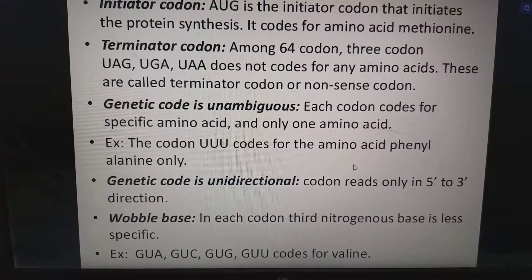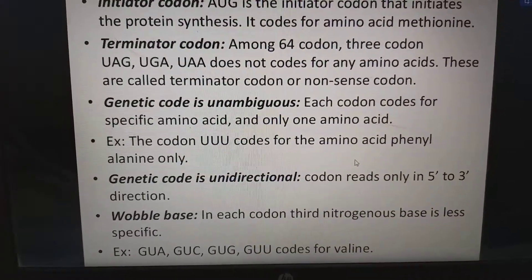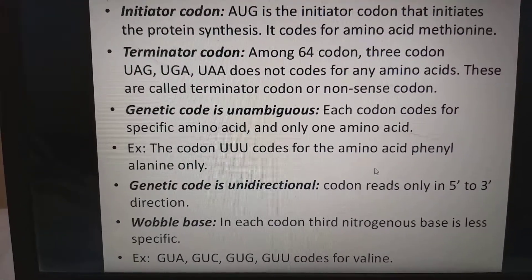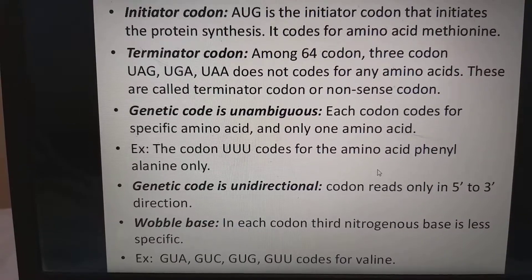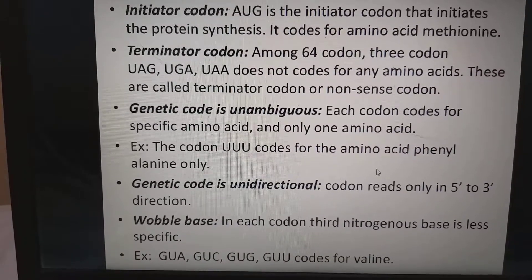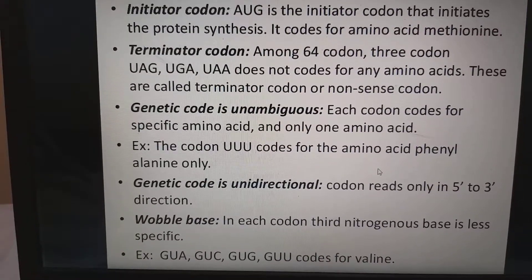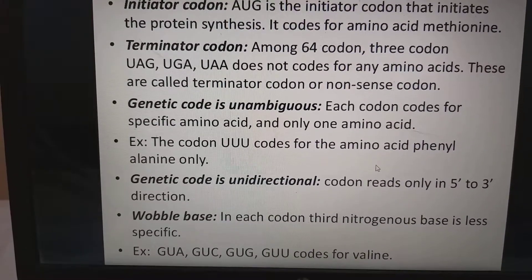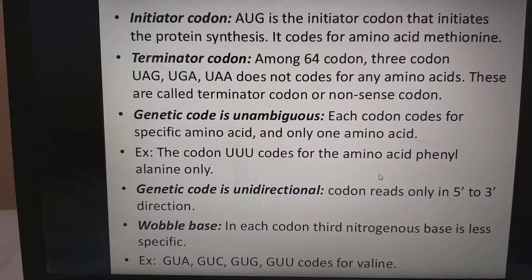Among 64 codons, three codons — UAG, UGA and UAA — do not code for any amino acid. These are called terminator codons or nonsense codons. The genetic code is unambiguous, meaning each codon codes for one and only one specific amino acid. For example, UUU codes for phenylalanine only. The genetic code is unidirectional — it reads only in the 5' to 3' direction. Wobble base: in each codon, the 3rd nitrogenous base is less specific — for example, GUA, GUC, GUG and GUU all code for valine.